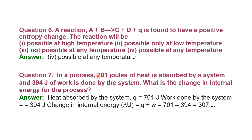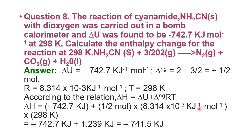Next: in a process, 701 joules of heat is absorbed by a system and 394 joules of work is done by the system. What is the change in internal energy? According to the first law of thermodynamics: q = 701 J, work done by the system = −394 J. Therefore ΔU = q + w = 701 − 394 = 307 joules. The change in internal energy of the system equals 307 joules.